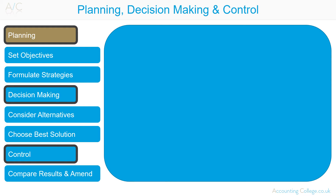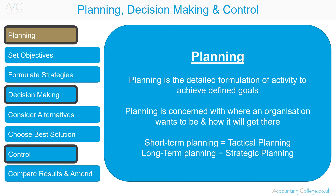Planning, decision making and control are the main functions of management. Planning is a detailed formulation of activity to achieve defined goals. Management look at what has happened in the past in order to make decisions for the future. For example, management will look at past sales records in order to plan production levels for future sales. Planning is concerned with where an organisation wants to be and how it will get there. Management plan by establishing short-term and long-term objectives and formulate strategies to achieve those objectives. Short-term planning is known as tactical planning while long-term planning is known as strategic planning.